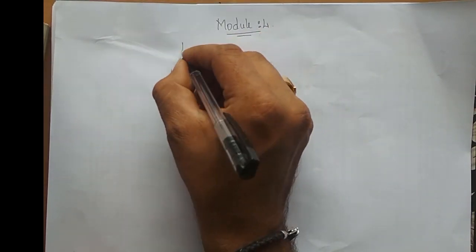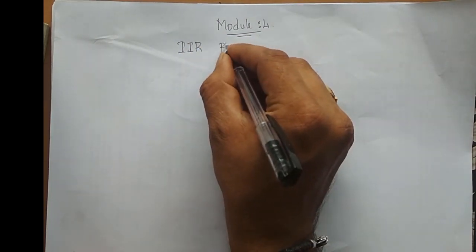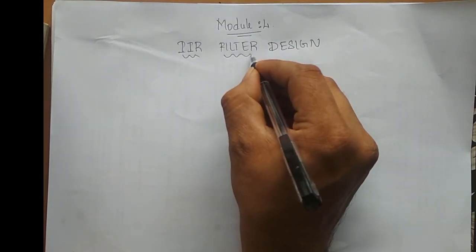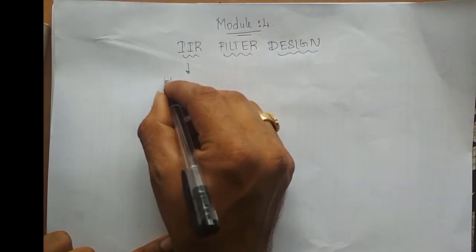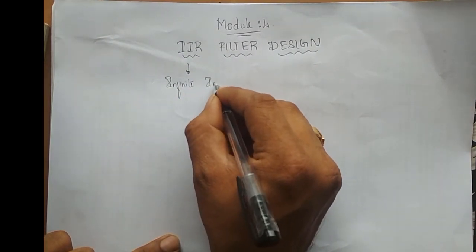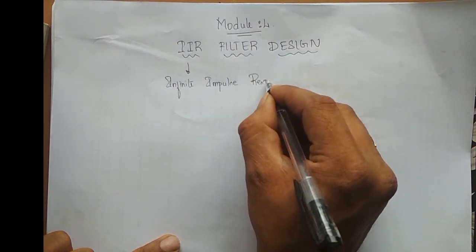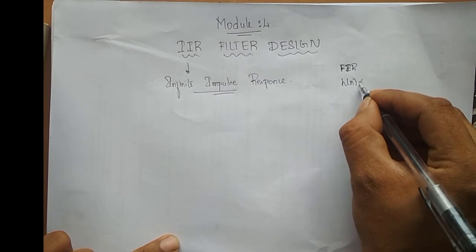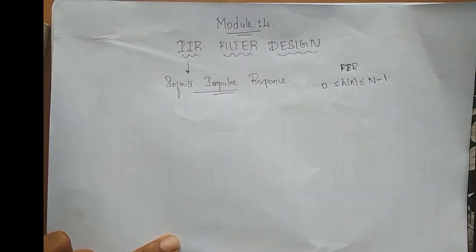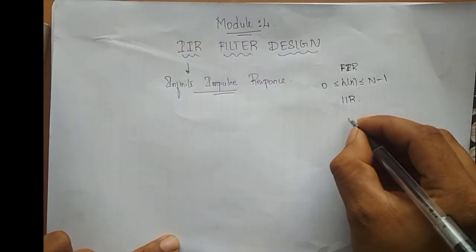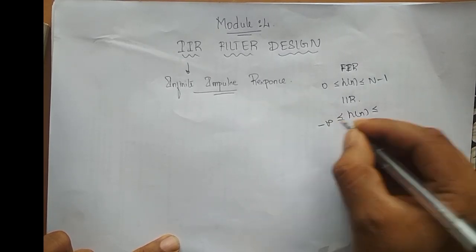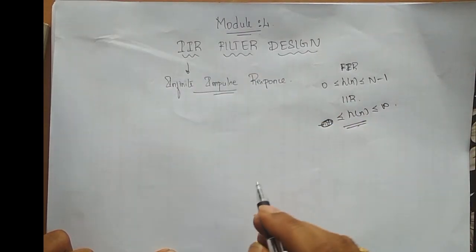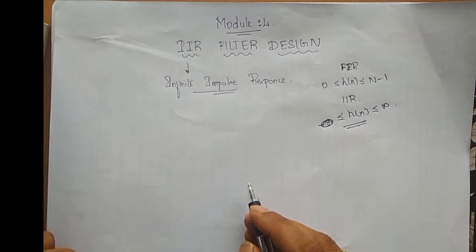Module 4 is on IIR filter design. IIR stands for Infinite Impulse Response. In an FIR filter, the impulse response H(n) was varying from 0 to the order of the filter, that is 0 to N minus 1. Whereas in an IIR filter, the impulse response H(n) varies from minus infinity to plus infinity — or for a causal system, from 0 to infinity. So basically, an IIR filter's impulse response is infinite in length.